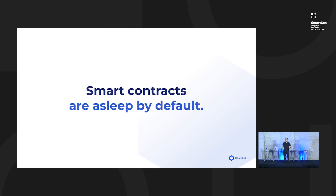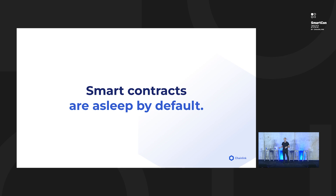Smart contracts are asleep by default, meaning they require someone or something to come along and interact with them. If there's something that needs to happen regularly in some smart contract you're writing, or you need some automation to occur, some external system needs to interact with it. In order for that to happen, there have been a few tools that have cropped up, like Chainlink automation and others, to solve this problem exactly.